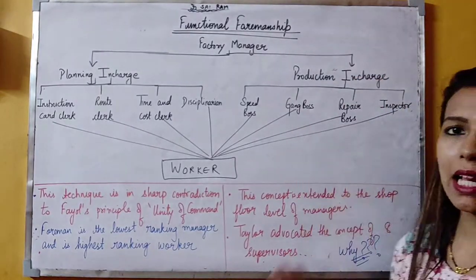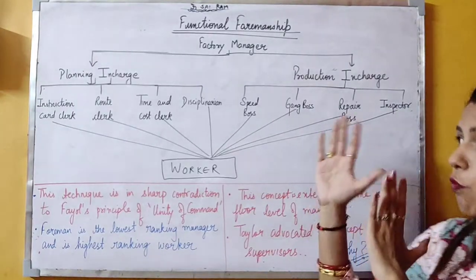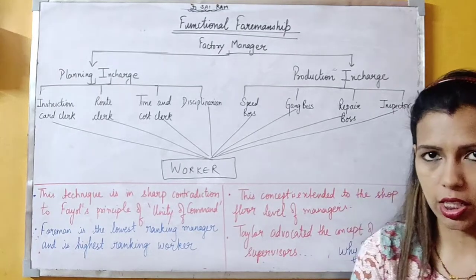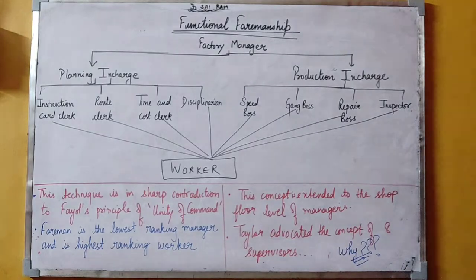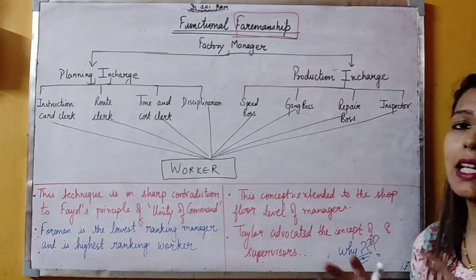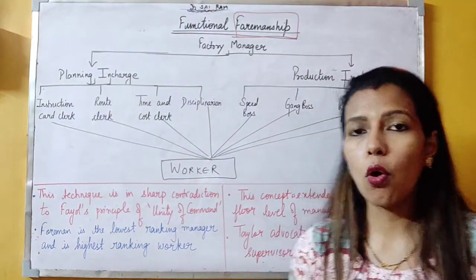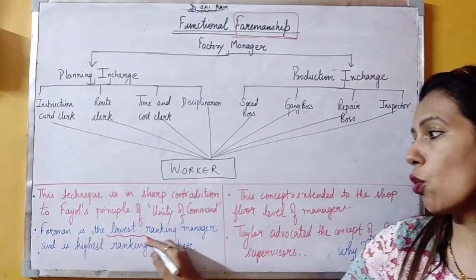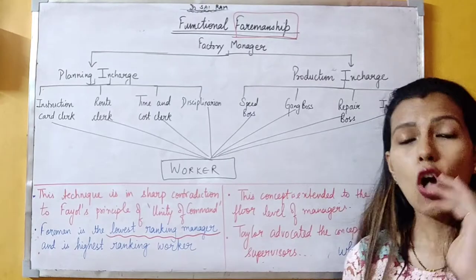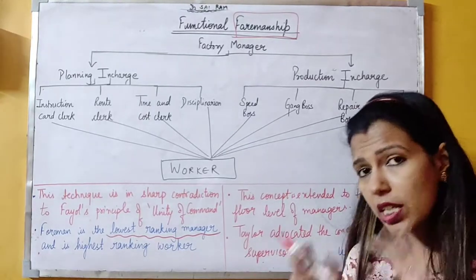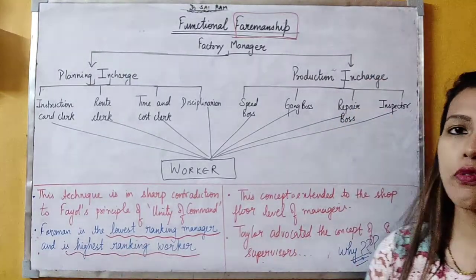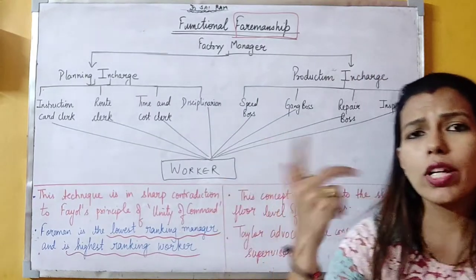Before we start the technique, it is necessary that the introduction is clear. In the Functional Foremanship technique, as you can see the name — Foremanship. First of all, who is a Foreman? A Foreman is the lowest ranking manager — the lowest ranking manager at the operational level management, where actual work happens.